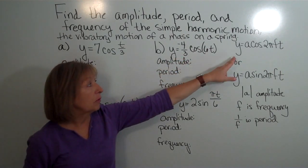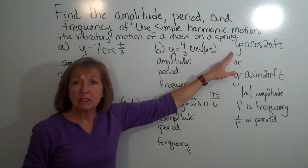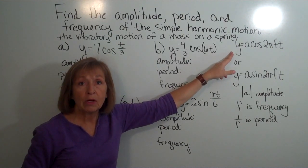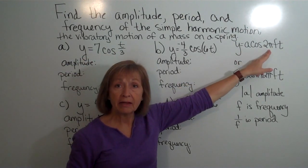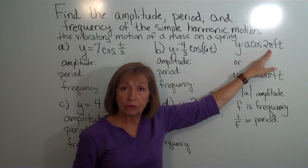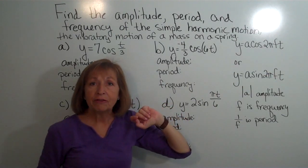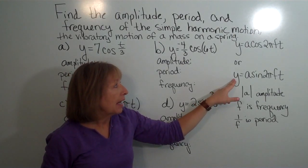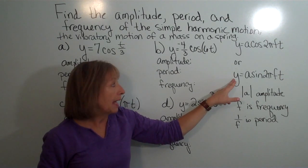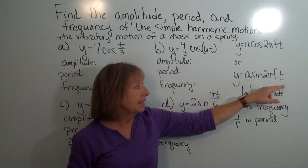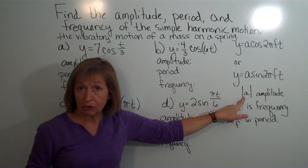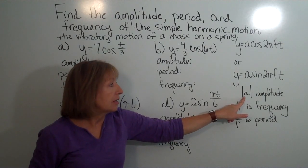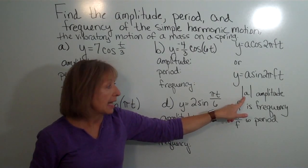With our simple harmonic motion, if we have the maximum displacement occurring at time t equals zero, then you use y equals a cosine of two pi f t for your simple harmonic motion model. If you have it at equilibrium at zero and then it starts to go off, then you have the motion modeled by y equals a sine of two pi f t, where the absolute value of a is your amplitude — the same role it played when we were graphing the trig functions.